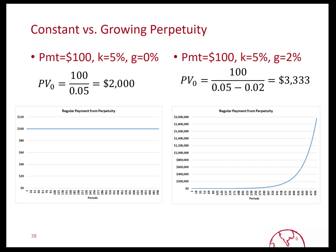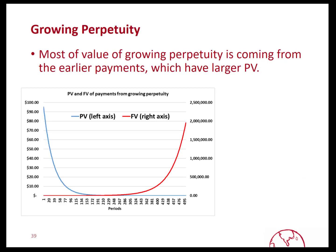One thing to keep in mind is that payments you receive far in the future will have very little value in today's dollars because of discounting and time value of money. Here we have that growing perpetuity — the red line shows the value of the fixed payment growing to almost $2 million by year 500. When you calculate the present value in today's dollars, however, that payment in year 500 is worth almost nothing. Whereas the $100 received at the end of year 1, discounted at 5%, is going to be roughly $95.